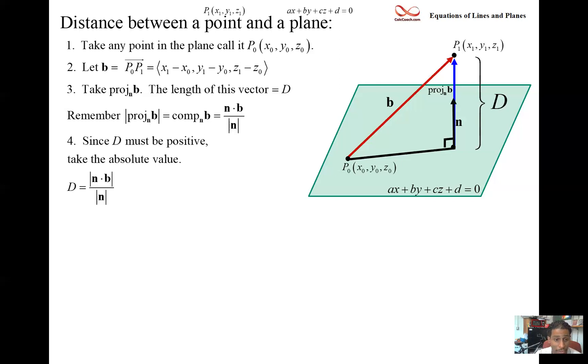And so we take the dot product and we get a(x₁ - x₀) + b(y₁ - y₀) + c(z₁ - z₀). That's our dot product.